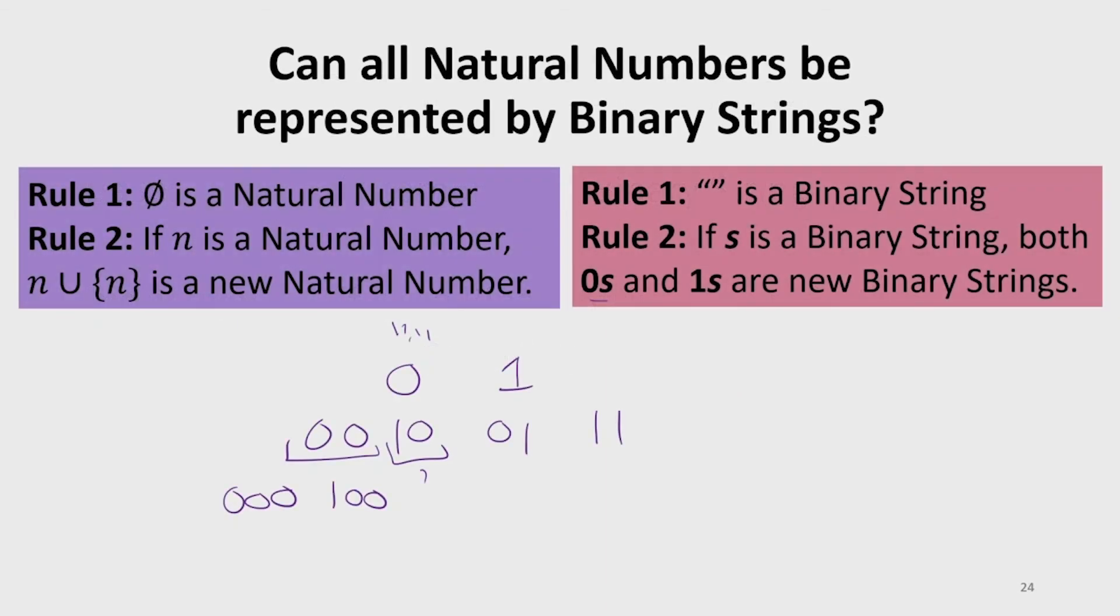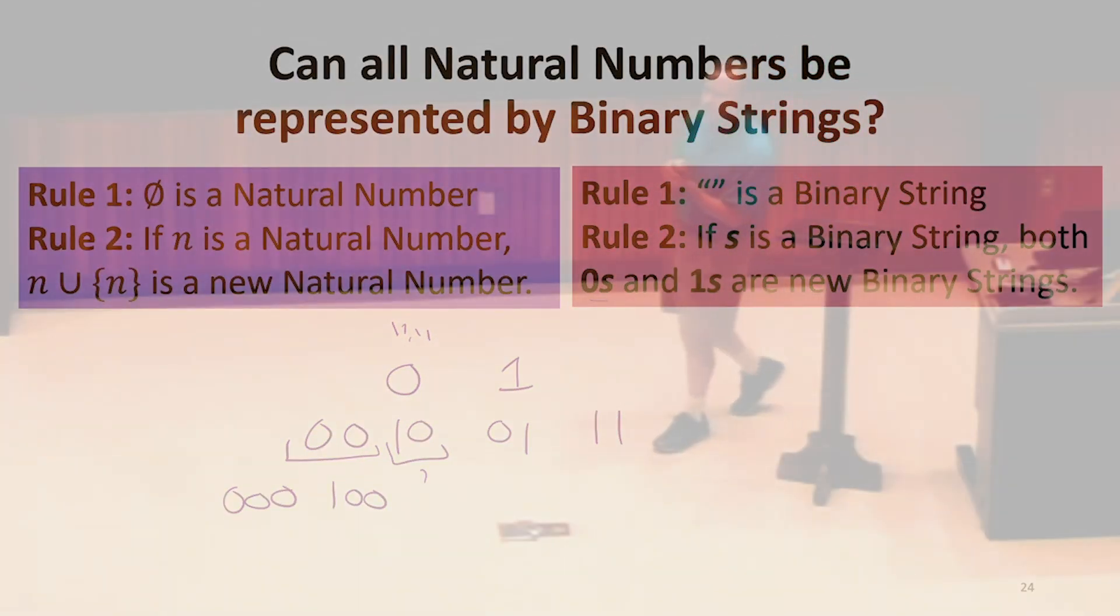Can we represent all the natural numbers? Yeah. So we should intuitively see that we can. But we already saw we could do it with just zeros. So we could prove, if we needed to prove this to someone who was more skeptical, could you do it?